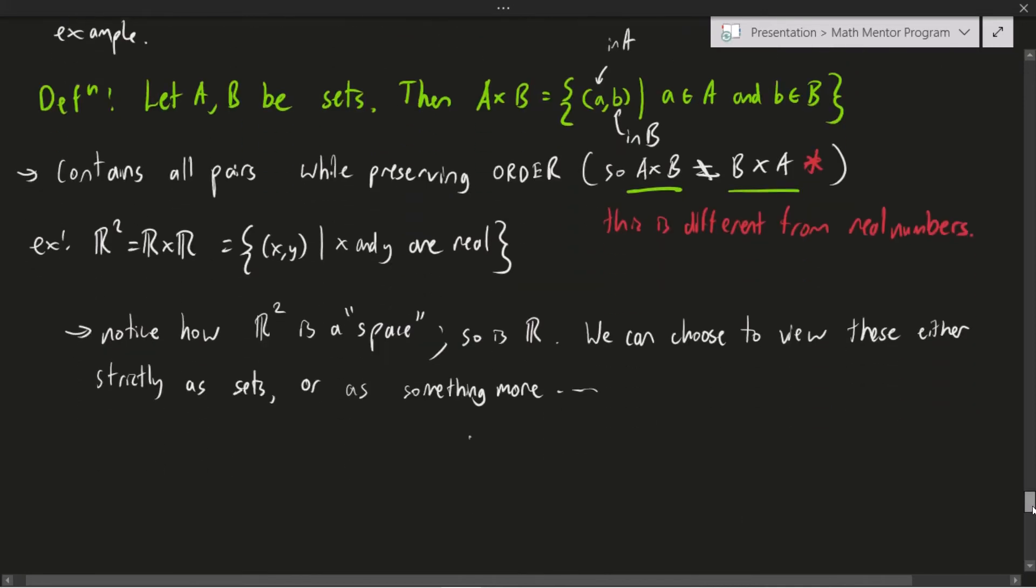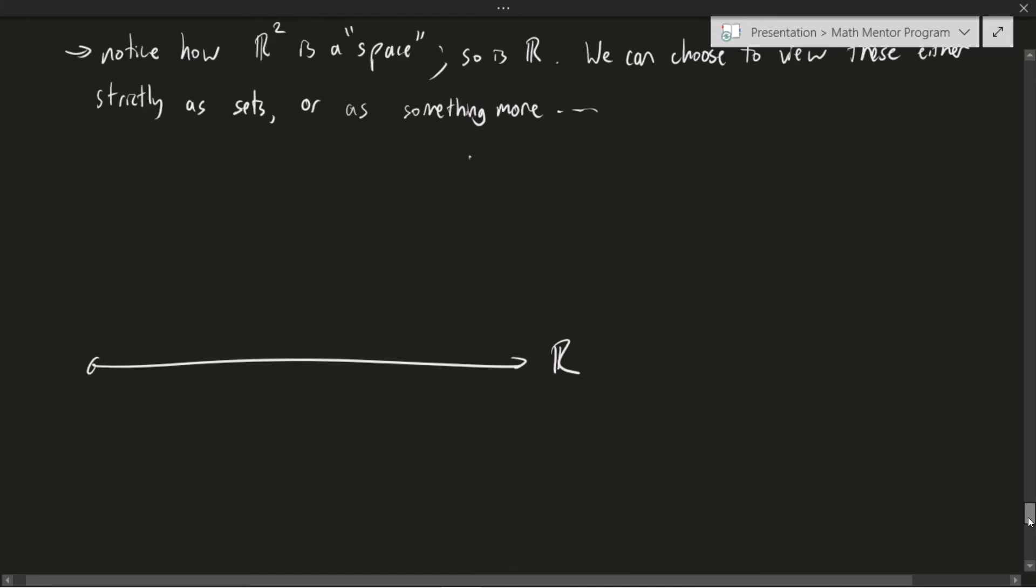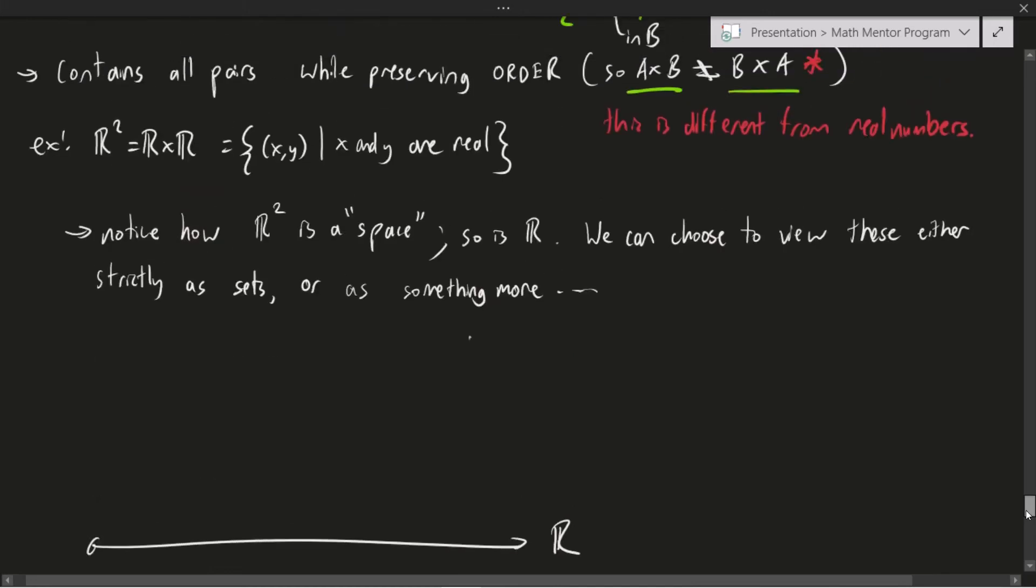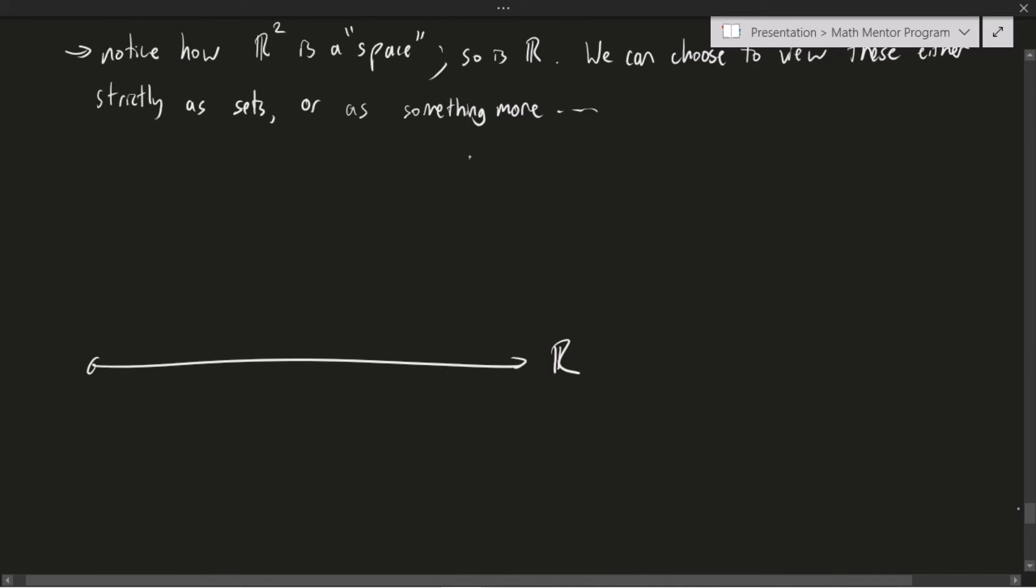Going back to our example of R², which we describe as R cross R, now it's very easy to see why this is the case. Because this is just the set as I've described here, this is by definition. And so X is a real number, Y is a real number. What does this really mean as a space though? Because R², we interpret it very often as a space where we can do math, right? We can choose to view R² as literally just this set. It's just a set of pairs, but we could also view it as a space. And sometimes that's more interesting, especially when we're doing something that's more geometric, like topology.